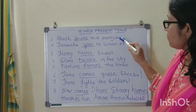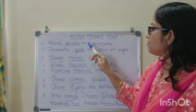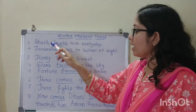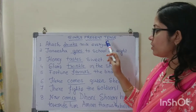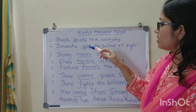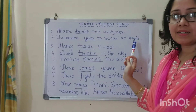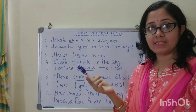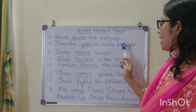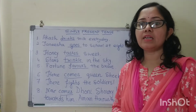Let me give you two more examples. Akash drinks milk every day — drinks. I drink, but Akash drinks milk every day. You have to understand the small nuances; we will discuss about this later. Tanisha goes to school at 8. I go to school at 8 every day. Tanisha also goes to school at 8 every day. So here we are talking about our daily actions.